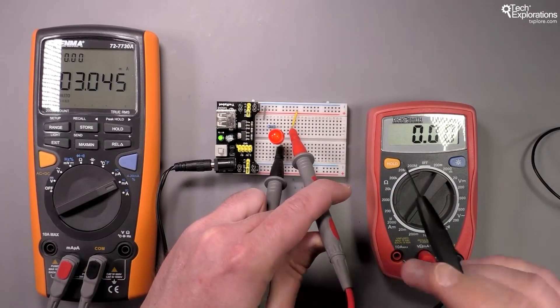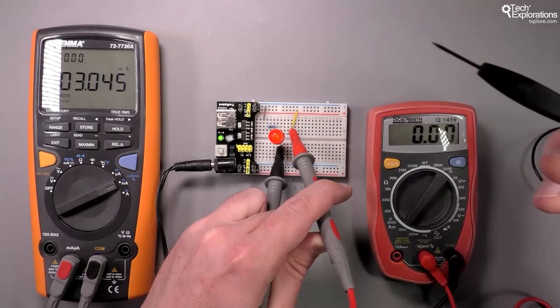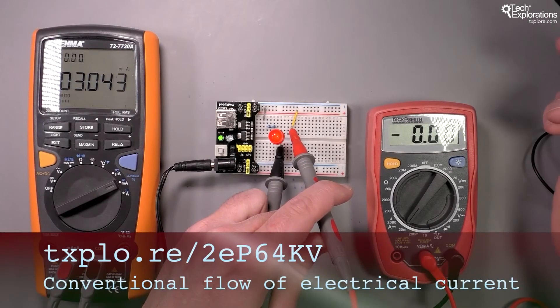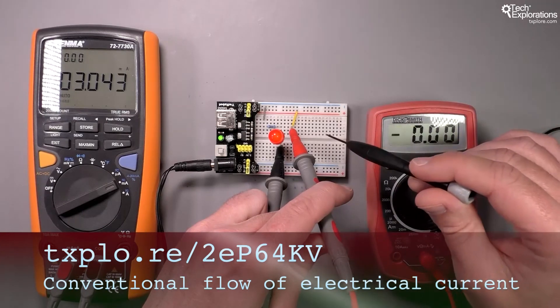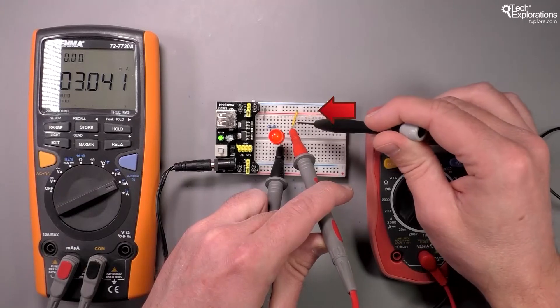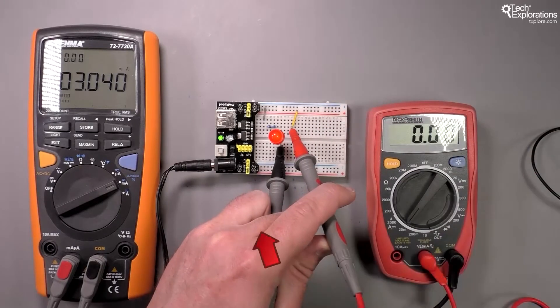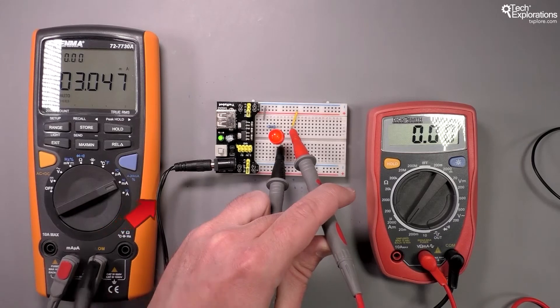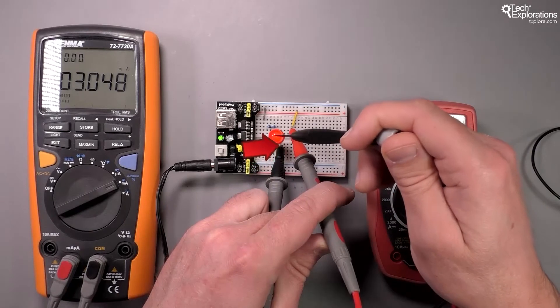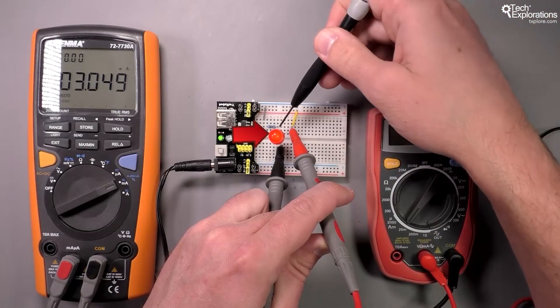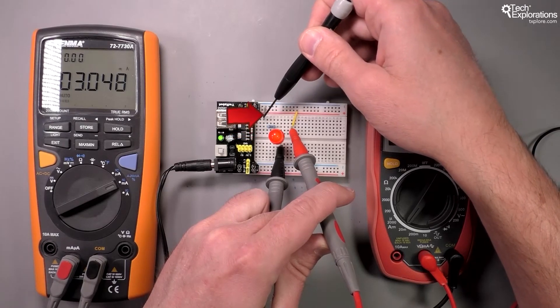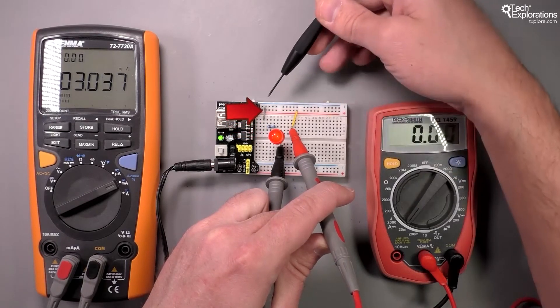While I'm holding the probes connected like that, let's look at how the current flows using the conventional theory of current flow. The current goes into the red power rail, through my red probe into the multimeter where it gets measured, then out through the black probe to the anode of the LED. It goes out the other side, the cathode, into the resistor, and through the resistor to the gray jumper wire.